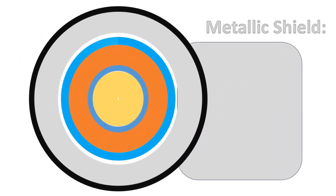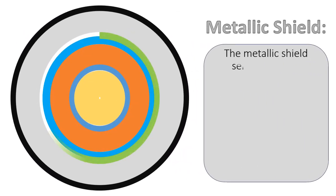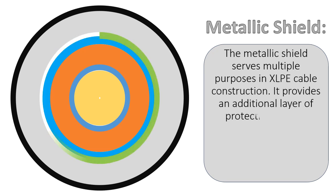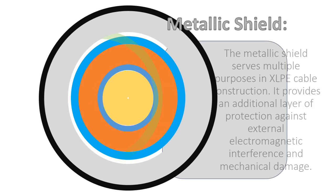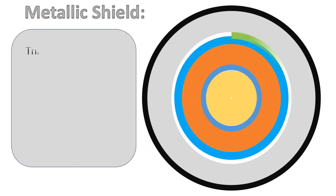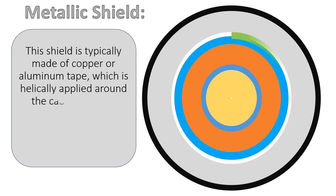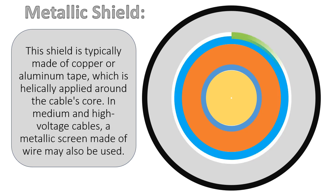Metallic shield: The metallic shield serves multiple purposes in XLPE cable construction. It provides an additional layer of protection against external electromagnetic interference and mechanical damage. This shield is typically made of copper or aluminum tape, which is helically applied around the cable's core. In medium and high voltage cables, a metallic screen made of wire may also be used.